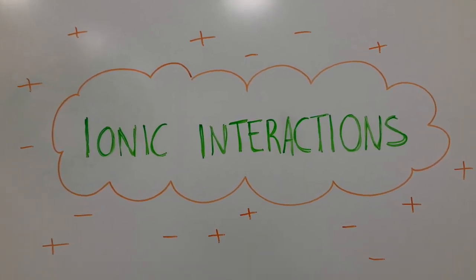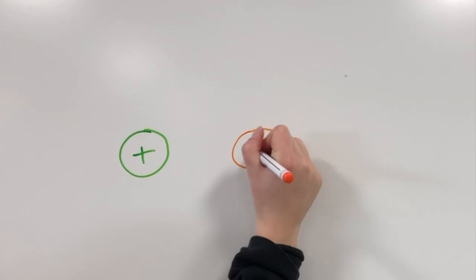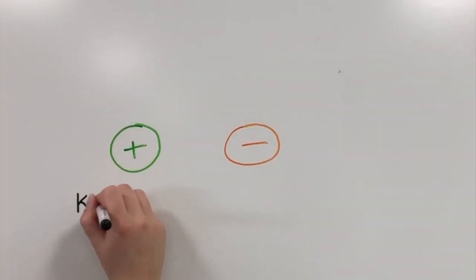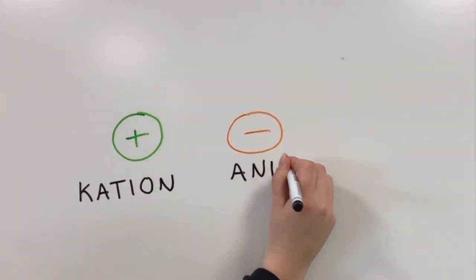Ionic interactions. An ion is an atom with an electric charge. It is either positive or negative. A positive ion is called a cation and occurs when an atom has a deficit of electrons, and a negative charge ion is called an anion.